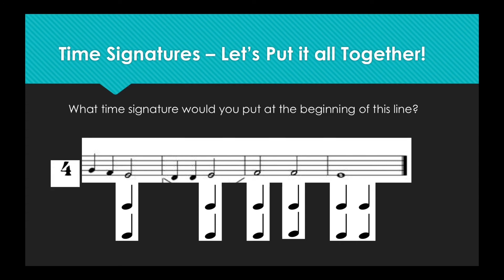The top number of the time signature represents how many beats are in each measure. So let's count: 1, 2, 3, 4 — that's four counts. 1, 2, 3, 4 — that's also four counts. 1, 2, 3, 4. One more time: 1, 2, 3, 4. That's four beats in each measure, which means 4 would be the top of our time signature. So the time signature for this line would be 4-4.